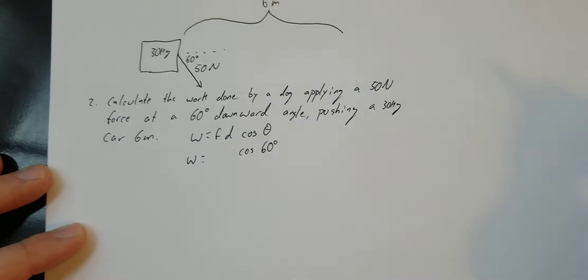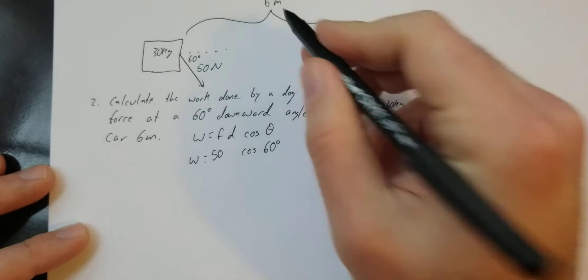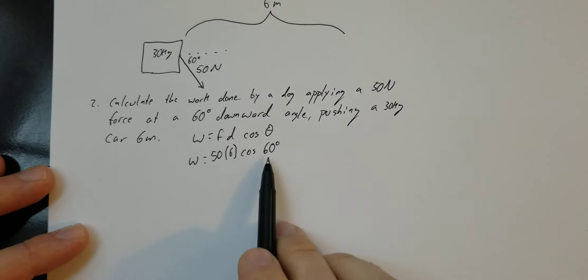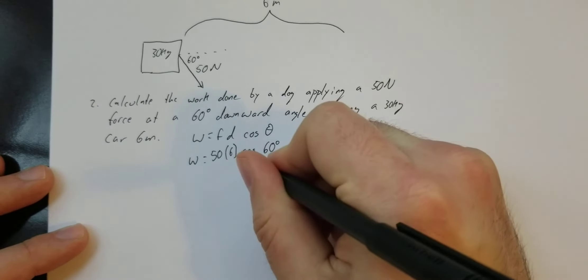The force applied is going to be 50, and the displacement is 6 meters. We can use our unit circle, or our trig identities, to know that the cosine of 60 degrees is one-half.